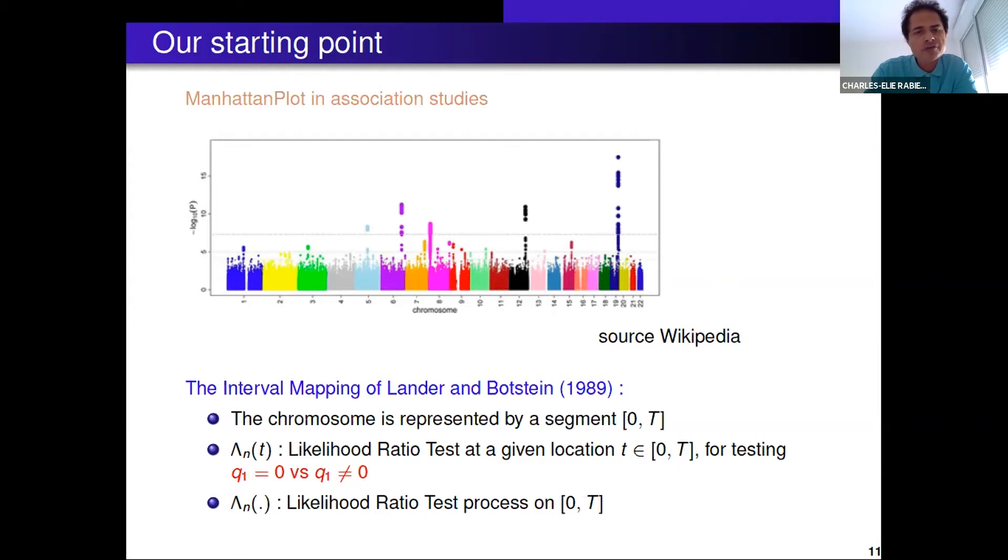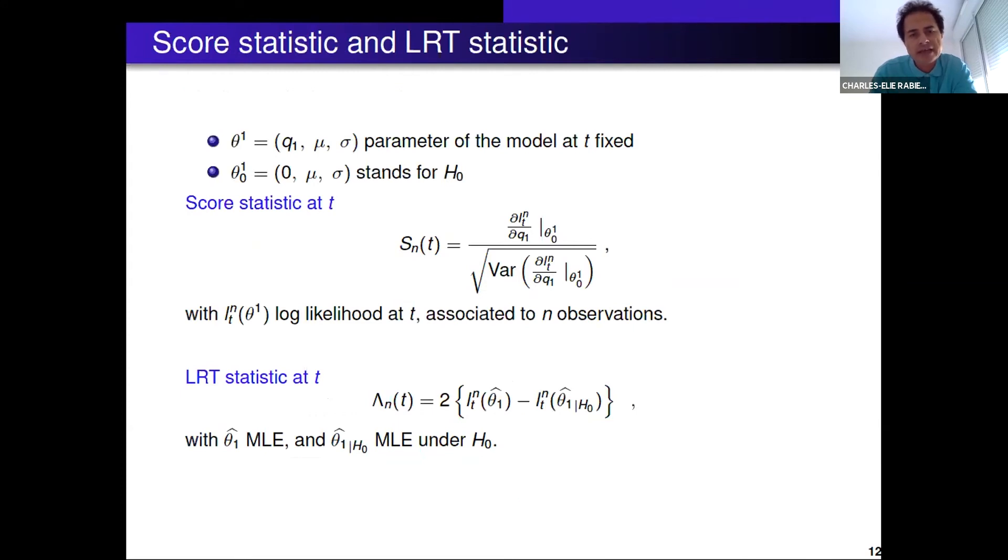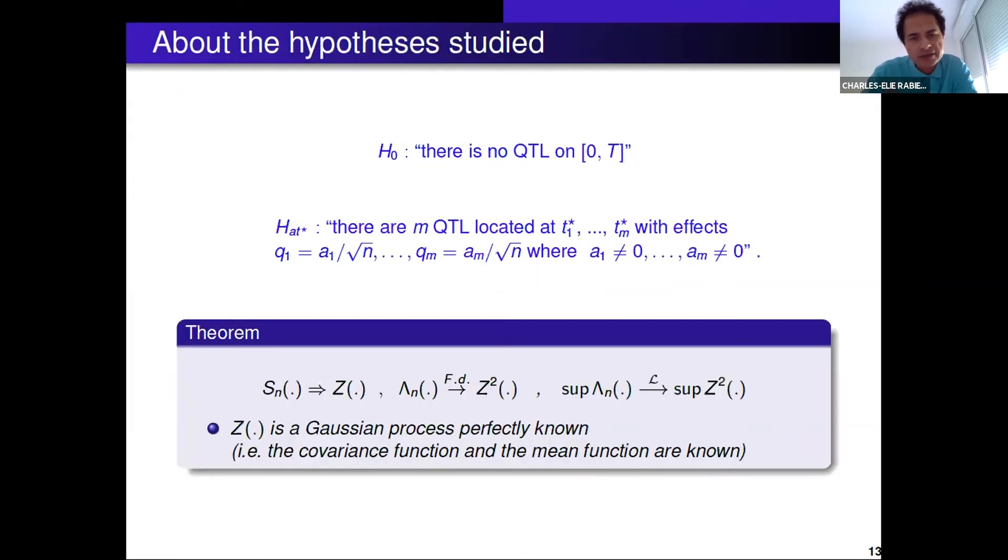I mainly focus on linkage studies. In the X axis you have your chromosome, in ordinate you have your likelihood ratio test, and you perform tests along the genome testing the absence of QTL versus the presence of QTL. Since all your tests are correlated along the genome, you have a likelihood ratio test process. You perform the score test at T, the LRT at T. What we have shown is that the limiting process of the score process is a Z process perfectly known. I mean that we know the covariance function, we know the mean function, and we have studied this process under the hypothesis of M QTL along the genome.